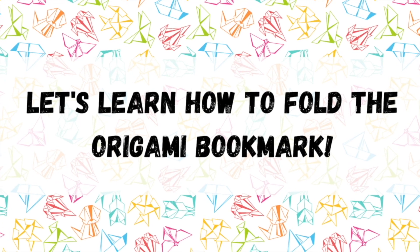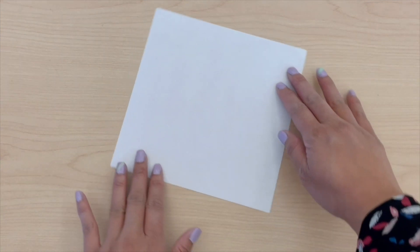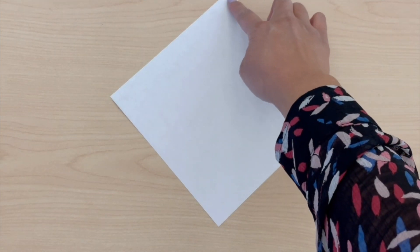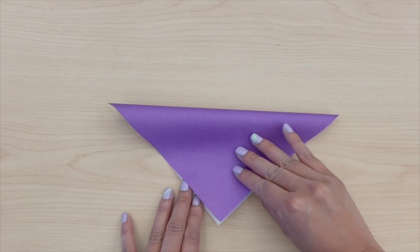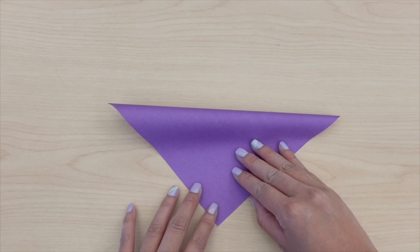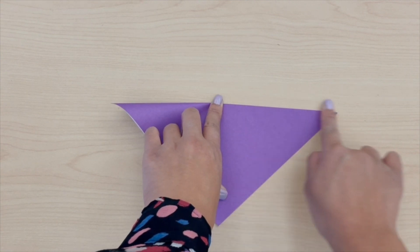Now let's learn how to fold the bookmark. Grab your square sheet of paper and rotate it so that it is a diamond shape. Now you are going to fold it in half. You are going to take this top point and fold it to the bottom point so that it forms a triangle. Make sure to crease the fold really well.